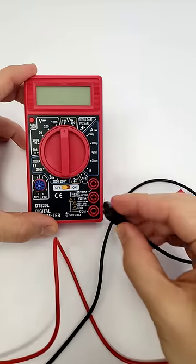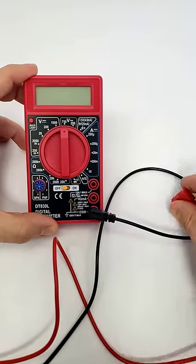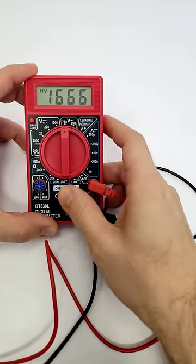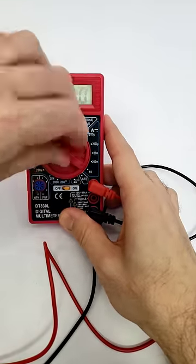To measure current with your multimeter, plug the black probe into the port labeled COM and the red probe into the port labeled 10 amps. Turn your multimeter on and turn the dial to the 10 amp setting.